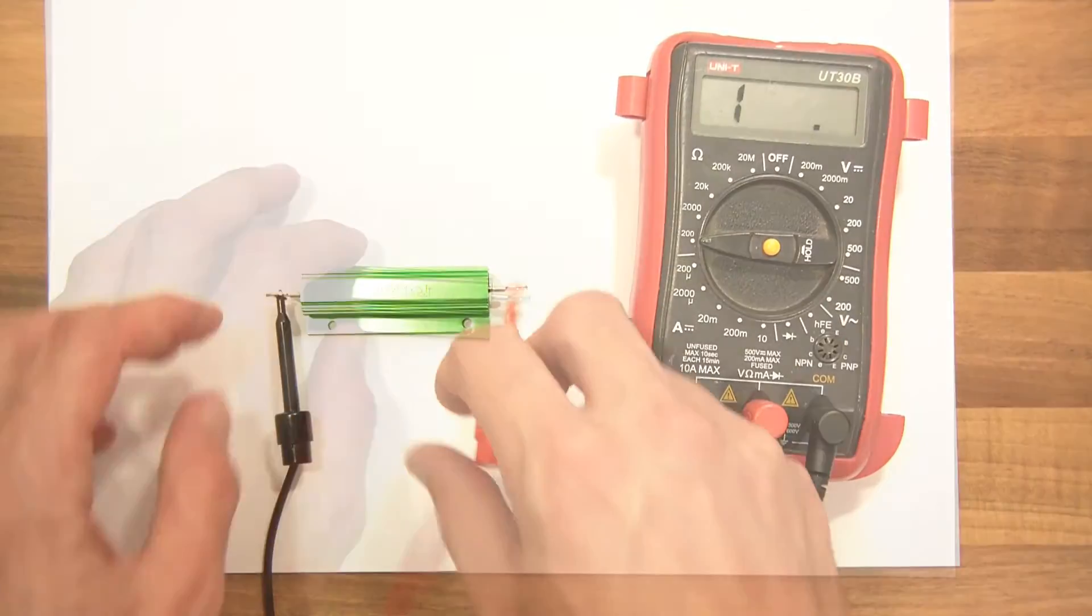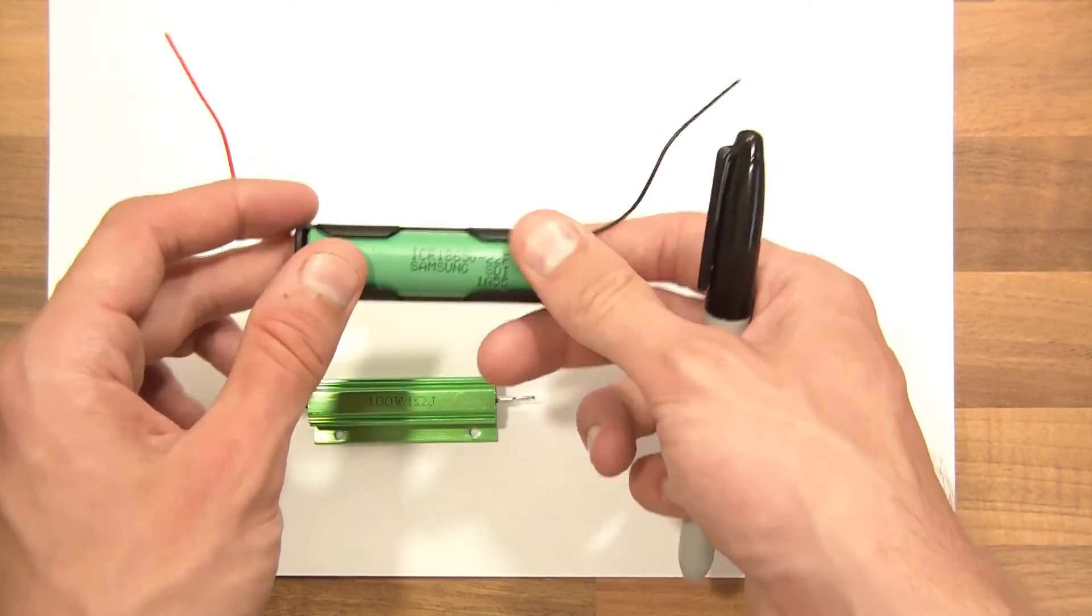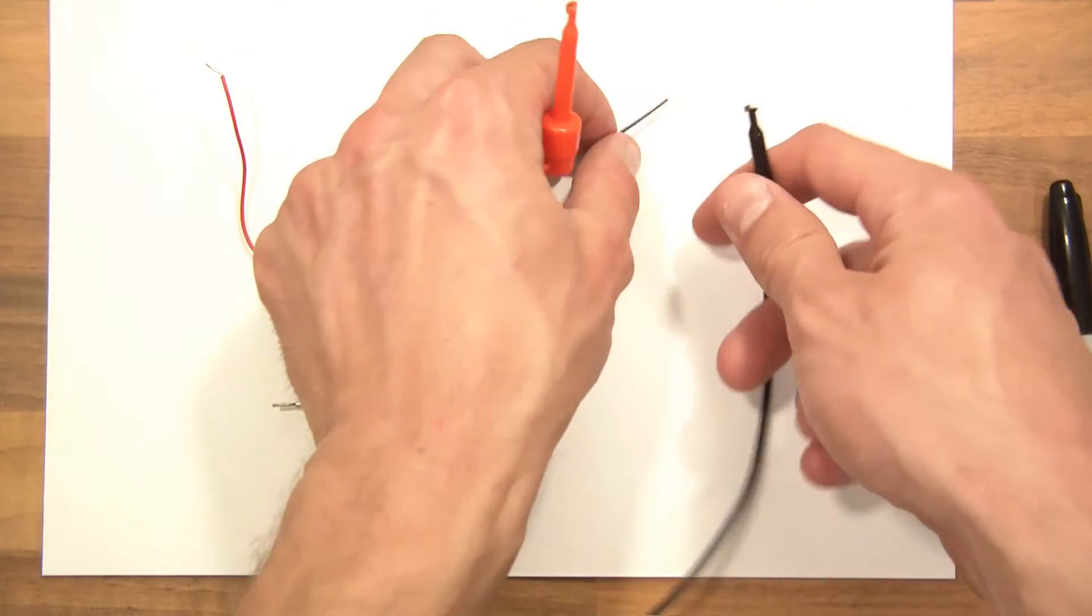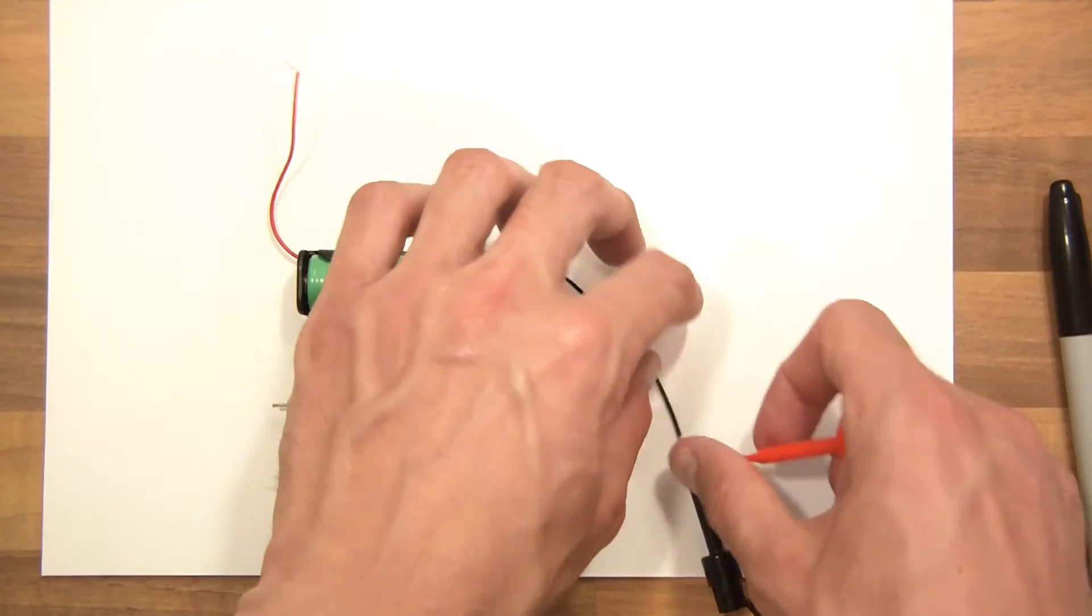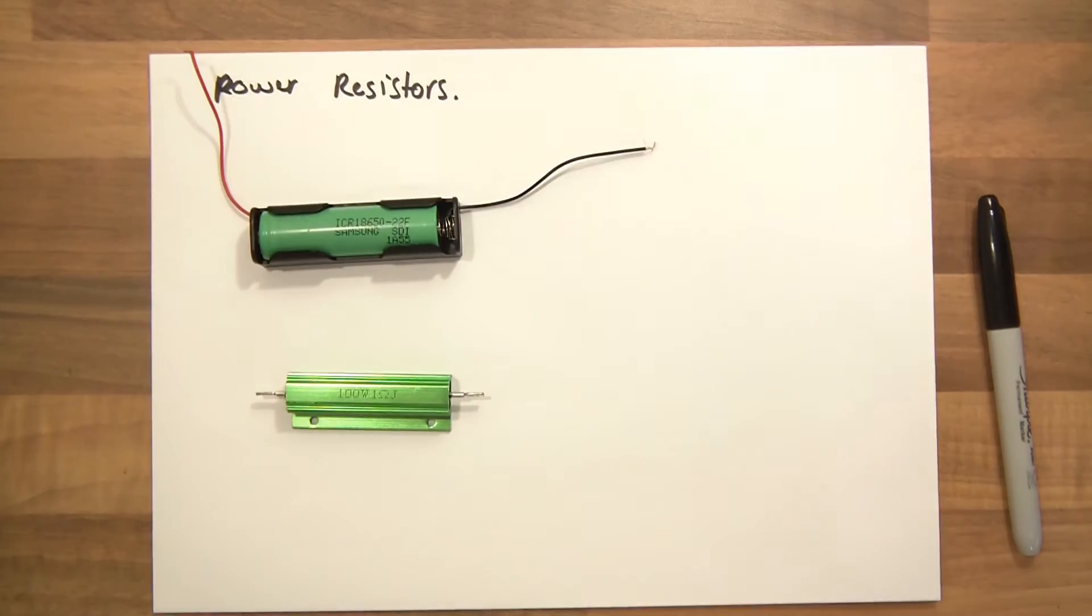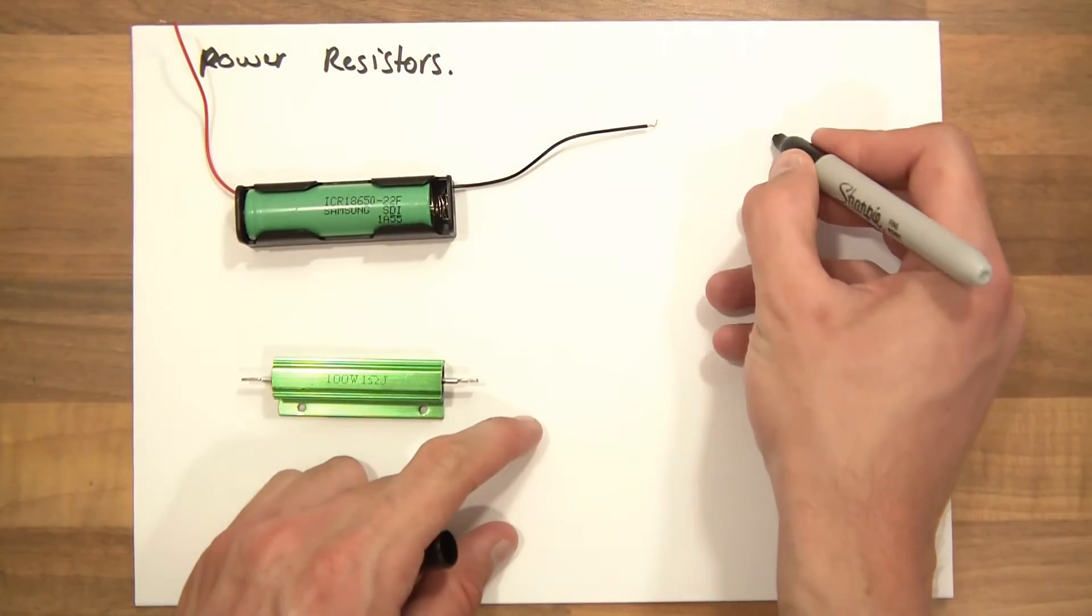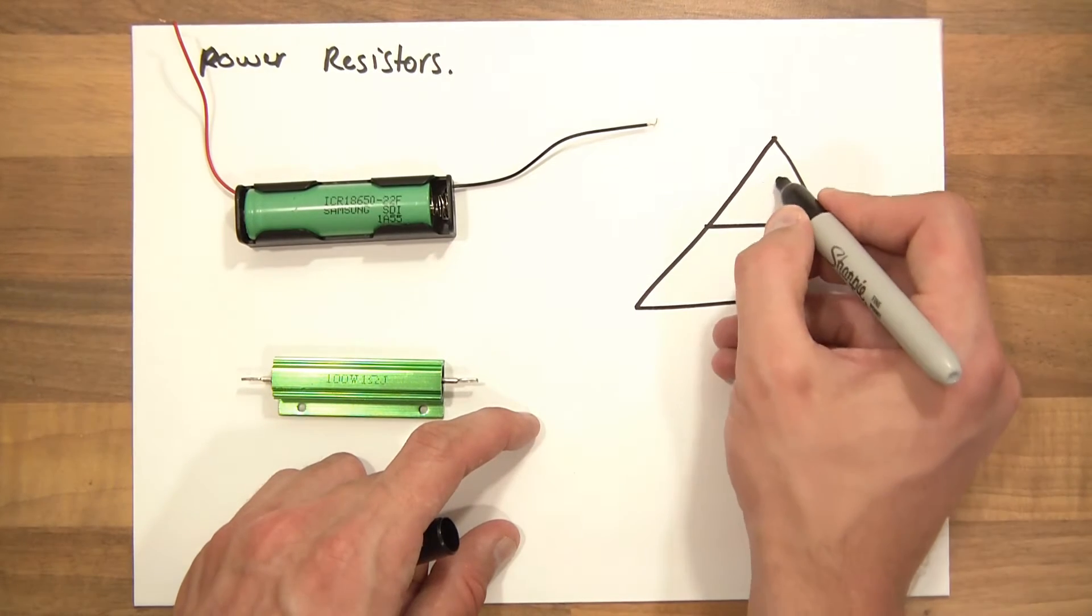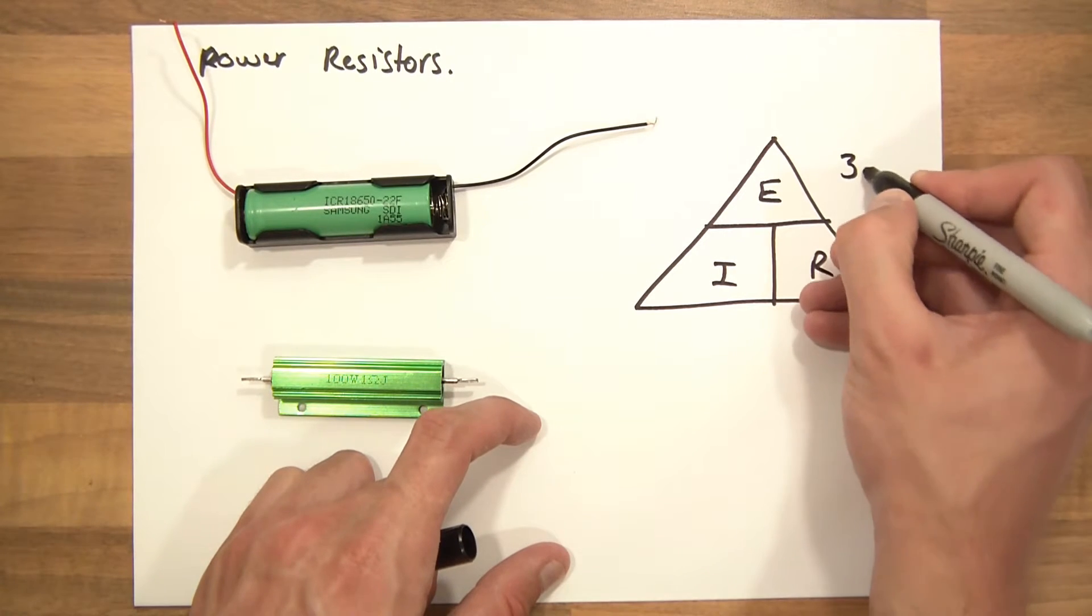So 1.2 ohms. I'll just move this out of the way. So we're going to use this to discharge a cell. And this is the cell I'm going to discharge. So I just need to find the voltage of this cell. It'll probably be about 3.8 volts or thereabout. And this is 3.9 volts. So I'll just start drawing a diagram now. I'm going to draw Ohm's triangle. E, I, R. So E, which means voltage, is 3.9 volts.